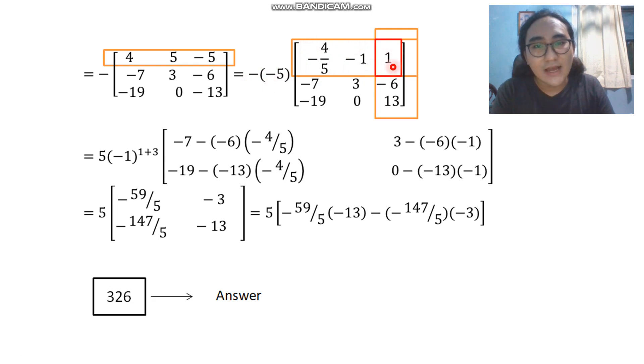So we have taken out negative 5. We're going to cross out the row and column that intersects with the pivot element. So negative 1 raised to 1 plus 3 because this is located at column 1. Oh, I'm sorry, the first row and the third column. Sorry about that.